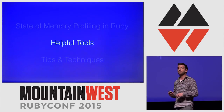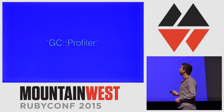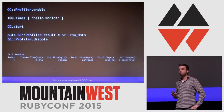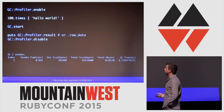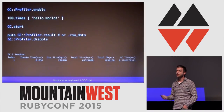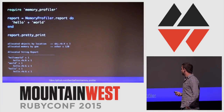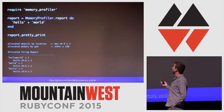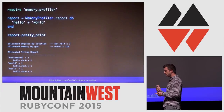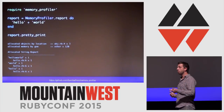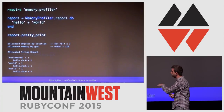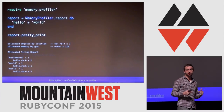Now let's talk about some helpful tools. One thing that exists is GC::Profiler, a built-in garbage collection API that lets you enable a profiler, do some work, then start a GC cycle — it will tell you when GC ran, how long it took, how many objects it cleaned up, and their total size. You also have memory_profiler, a gem by Sam Saffron. It has a simple API: take a memory profiler report block, get a report object, and pretty print it. It tells you allocated objects by location, by file, by method name, and even pinpoints which gem they came from.